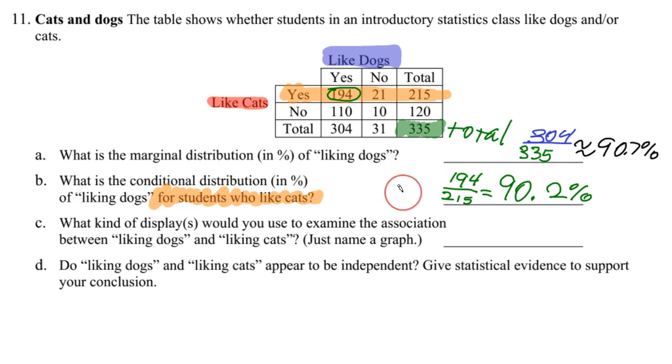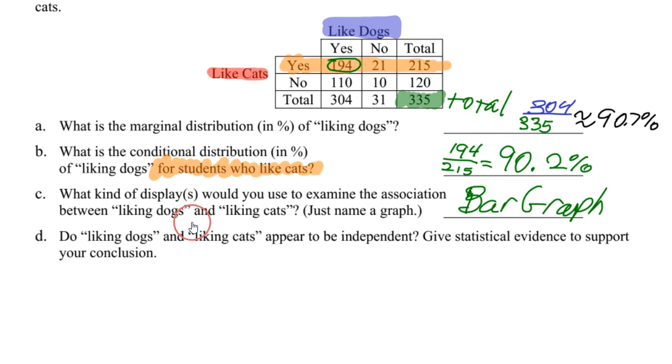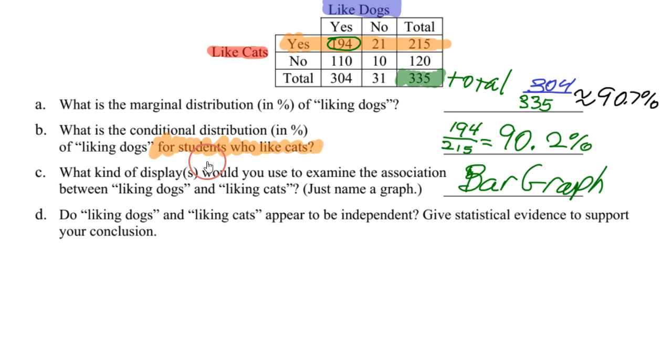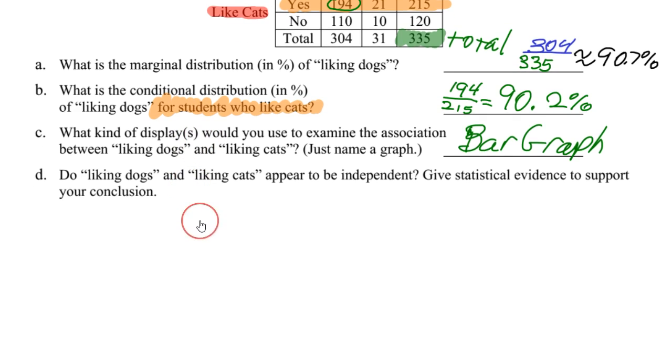Now it says, what kind of displays would we use to examine the association between liking dogs and liking cats? Just name a graph. Well, the best one is going to be some type of a bar graph in this case. Maybe a pie chart could be used also. But I tend to prefer bar graphs just because they just seem to be easier to compare. It's hard to compare like the wedge shapes of a pie chart sometimes.